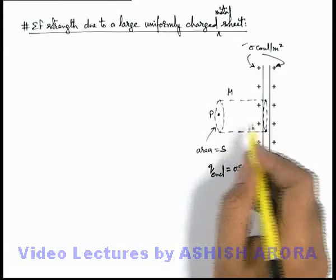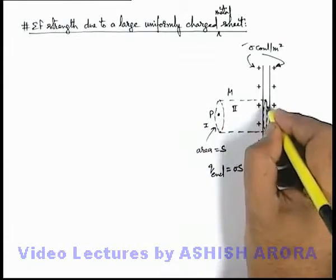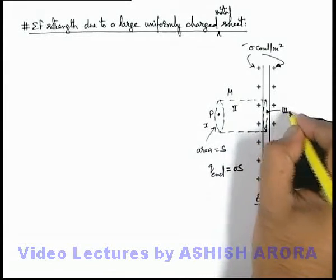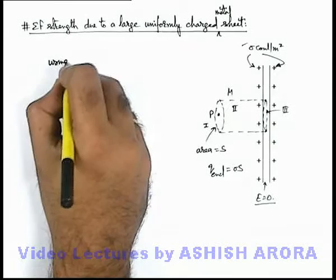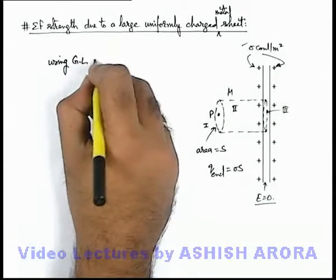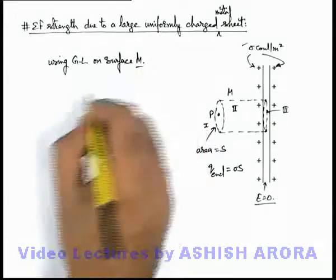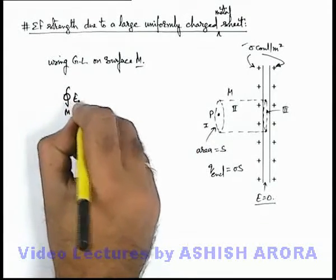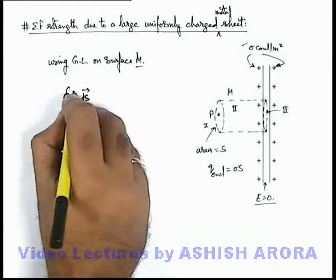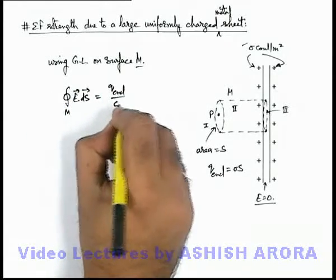In this situation, again we divide the cylindrical surface in three parts: one, two, and this is third part. And here we can say that using Gauss law on surface M, we can write that the total flux through the surface M by integrating electric field dot dS for the surface must be equal to Q enclosed by epsilon not.